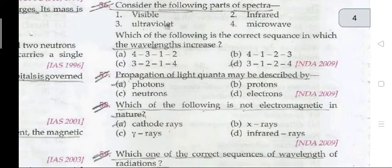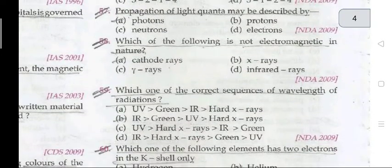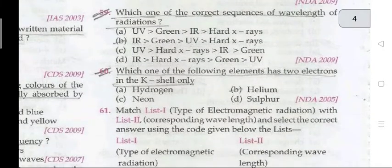Question 53: the number of unpaired electrons in Mn²⁺ is 5. Question 54: the wavelength of X-rays is of the order of 1 angstrom. Question 55: considering the parts of spectra — ultraviolet, visible, infrared, and microwave — light quanta may be described by photons. Question 56: which of the following is not electromagnetic in nature? Cathode rays. Question 57: the correct sequence of wavelength of radiation is IR > green > UV > hard X-rays.